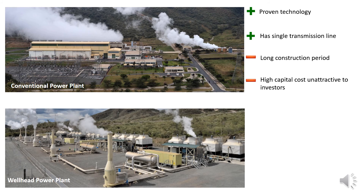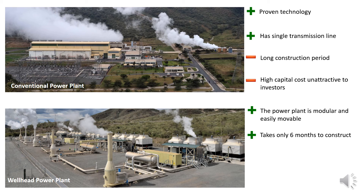Moving on to wellhead plants, their main advantages are: the power plant is modular and easily movable, hence can be easily repaired or moved to another site; each module is independent, meaning others continue to operate even when one unit fails; and it takes only 6 months to construct and start operation, making it attractive to investors. On the contrary, their disadvantages include a slightly higher cost per kilowatt due to separated technology such as transformers and steam separators, and higher steam consumption per megawatt because of steam energy losses in every module, though not significant.